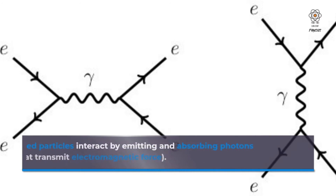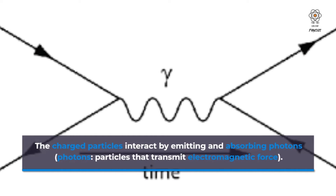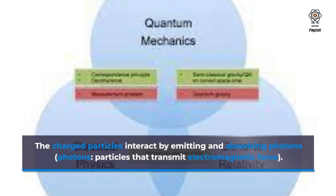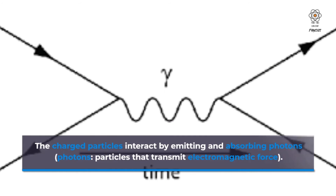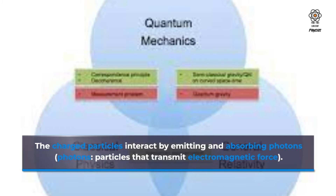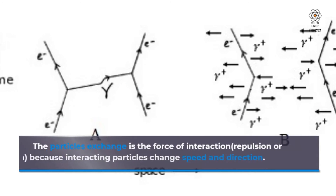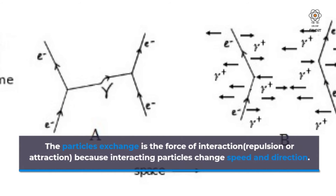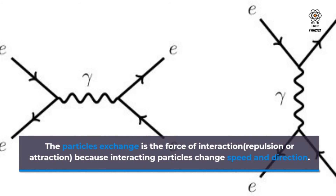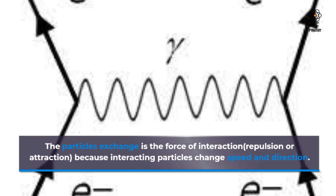The charged particles interact by emitting and absorbing photons — particles that transmit electromagnetic force. The particles' exchange is the force of interaction, repulsion or attraction, because interacting particles change speed and direction.